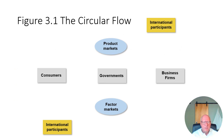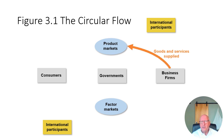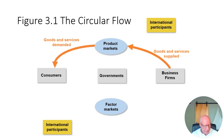On our last slide in this section, we're going to look at the circular flow diagram. Business firms are producing goods and services and supplying them to the product market — they're going there to sell something. The goods finally end up in the homes of consumers. So the consumers demand the goods and services, and the firms supply the goods and services.